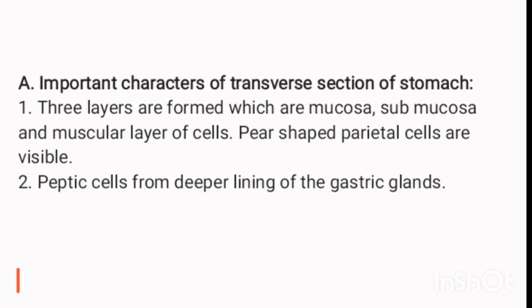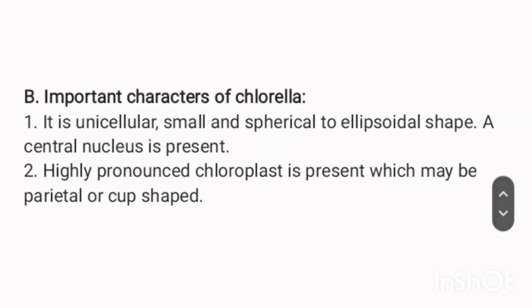Important characters of transverse section of stomach. 1. Three layers are formed which are mucosa, submucosa, and muscular layer of cells. Pear-shaped parietal cells are visible. 2. Peptic cells form the deeper lining of the gastric glands.